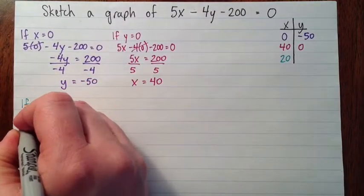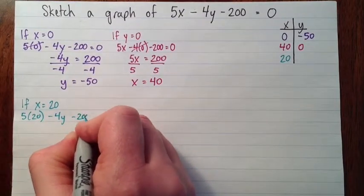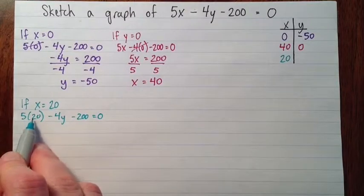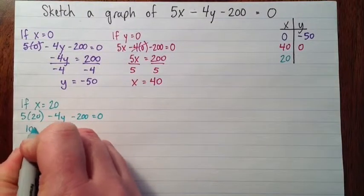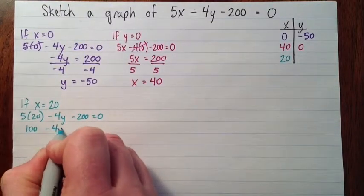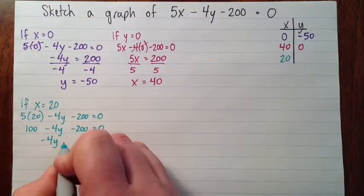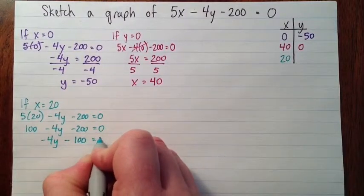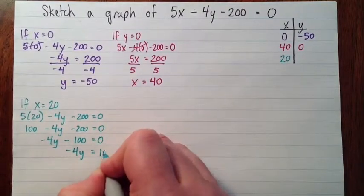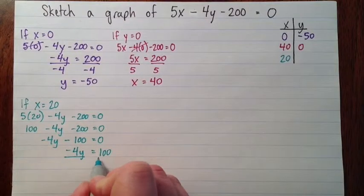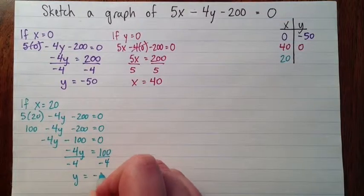Then I have 5 times 20 minus 4y minus 200 equals 0. So that's 100 minus 200, maybe I'll write all that down. 100 minus 4y minus 200 equals 0. So that's negative 4y minus 100 equals 0. I'll add 100 to both sides, negative 4y equals 100. And then I'll divide both sides by negative 4, and I get y equals negative 25.